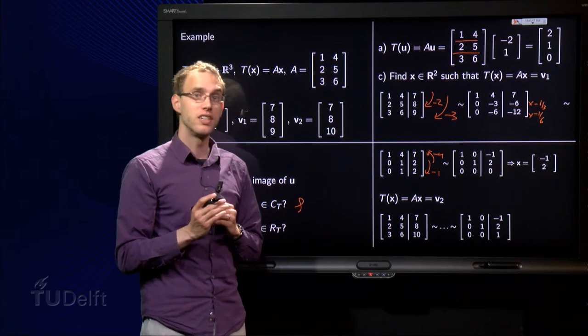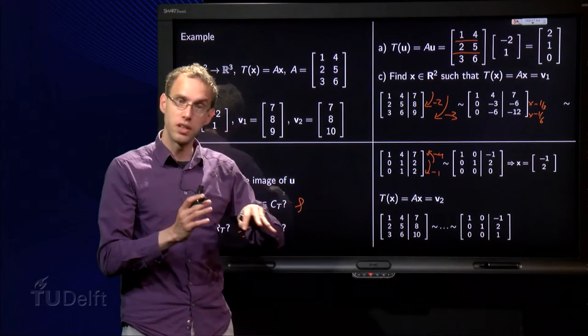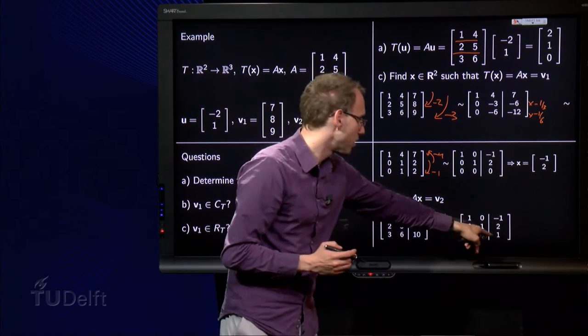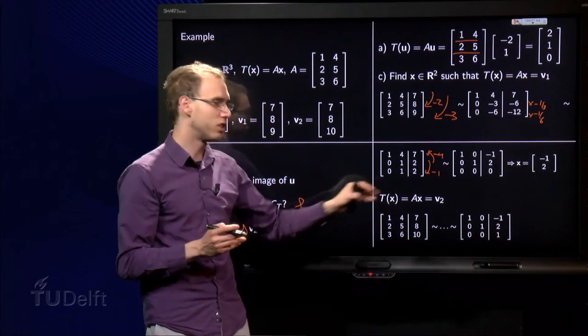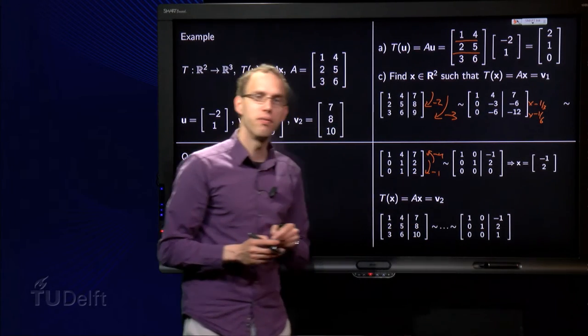So there we are, that one is okay. Then the last one, [7, 8, 10], almost the same, so we do the same technique, only a 10 instead of a 9 over there. We do of course the same steps, so we get one more over here. You can do the row reduction steps yourself if you like.